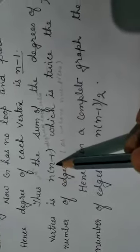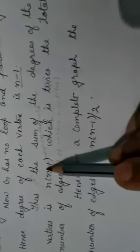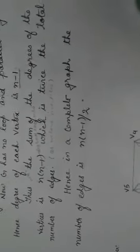The sum of degrees of the vertices is the number of vertices n multiplied by the degree of each vertex, that is n minus 1. So sum of degrees equals n(n−1), which is twice the total number of edges. Hence, if n(n−1) equals twice of e, the number of edges e will be n(n−1)/2.